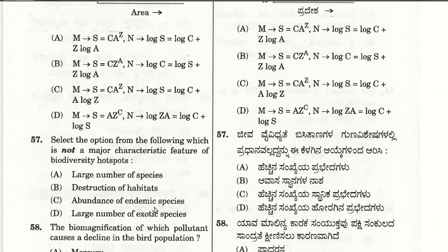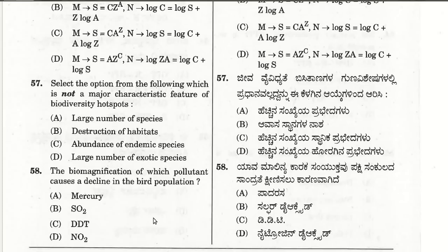The fifty-seventh question: which is not a major characteristic feature of biodiversity hotspots? Destruction of habitats is not a characteristic feature of biodiversity hotspots — it is actually a cause of biodiversity depletion. Large number of species, abundance of endemic species, and large number of exotic species are all characteristic features of biodiversity hotspots.